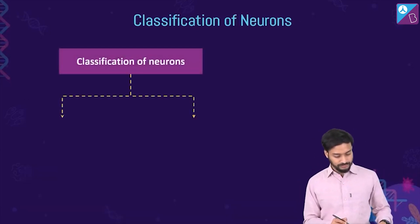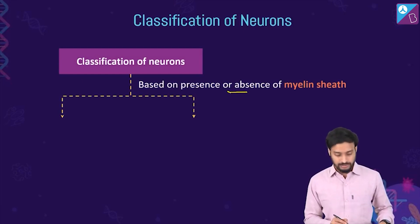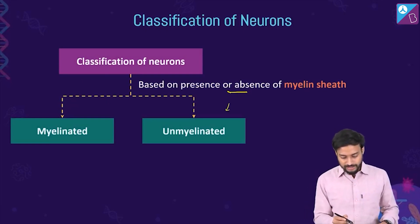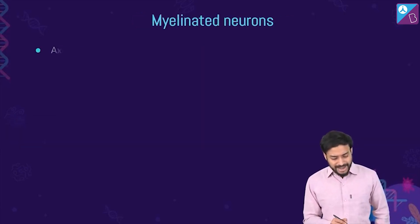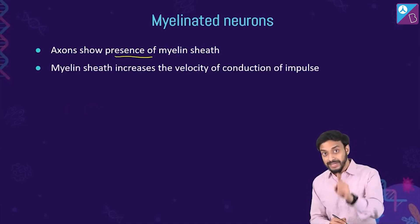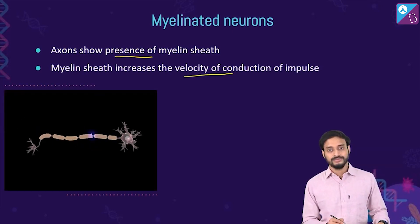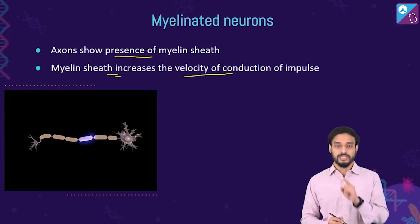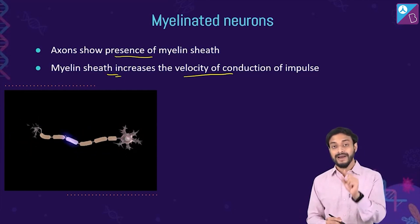Neurons can be classified based on the presence or absence of myelin sheath as myelinated or unmyelinated. Myelinated neurons have axons with a myelin sheath, which increases the velocity of conduction of the impulse.